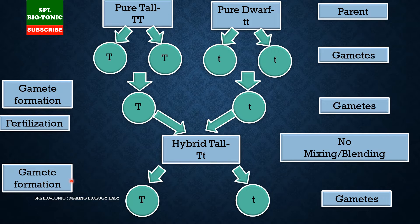Small t is not disappearing totally. During the next round of gamete formation, the alleles get separated — the first gamete carries capital T and the second gamete carries small t. Each gamete contains only one of the two alleles.